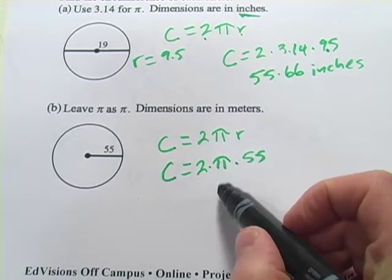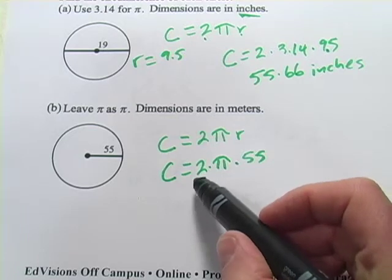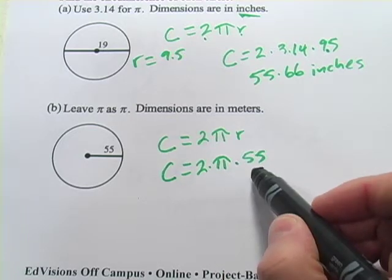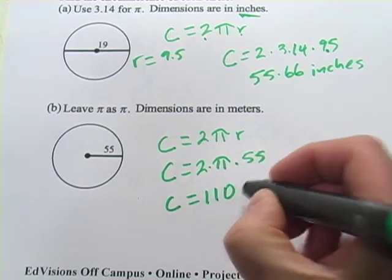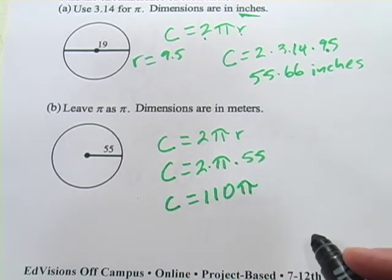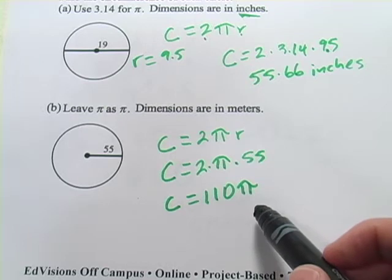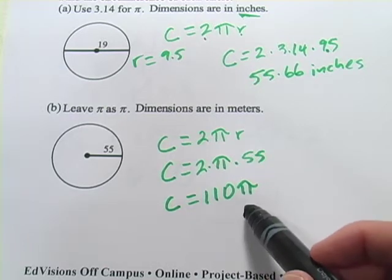And now since I'm leaving π alone, I'm going to do the multiplication that I can. I can multiply 2 times 55, that's 110. So this circumference is 110π.